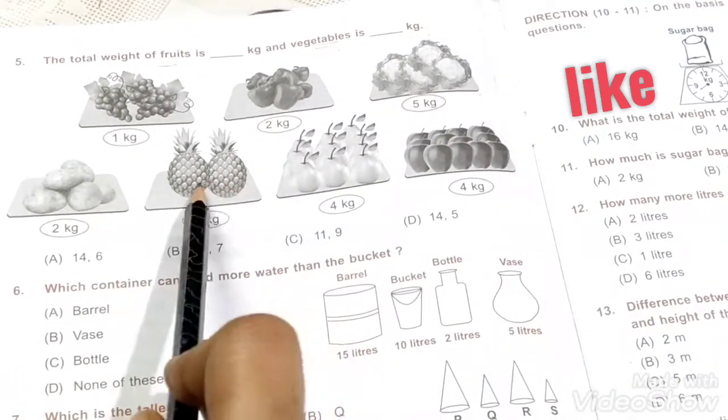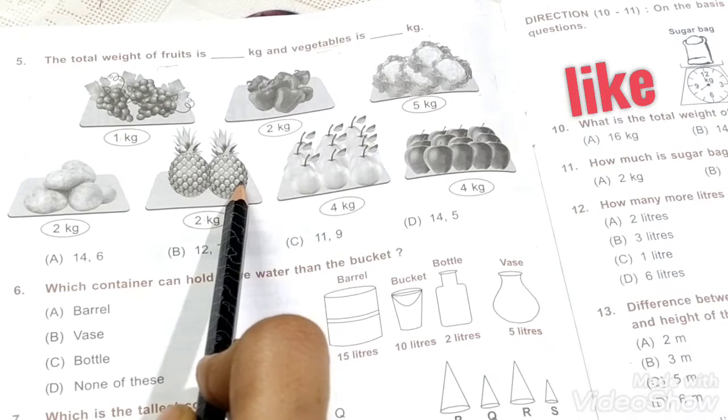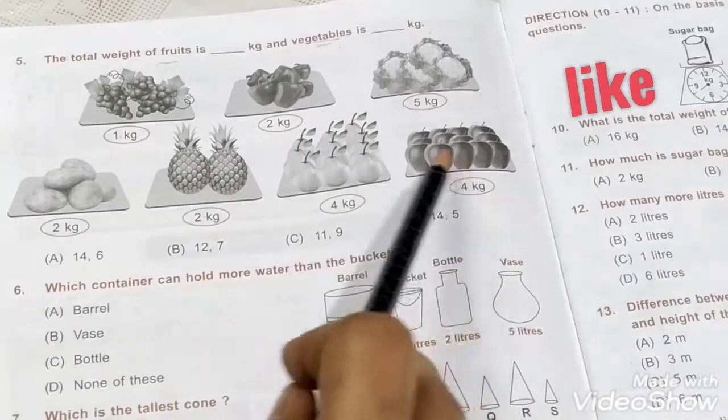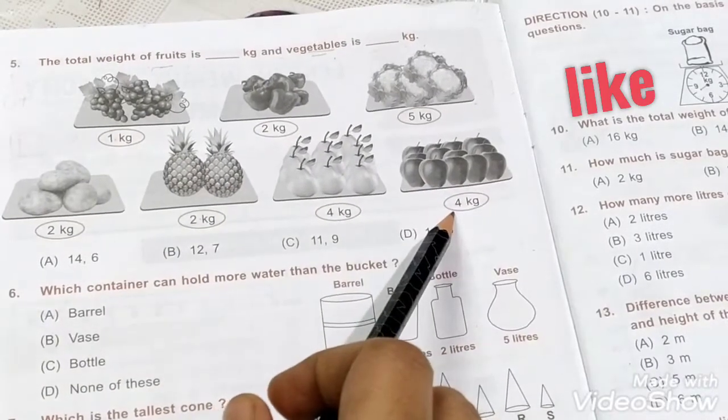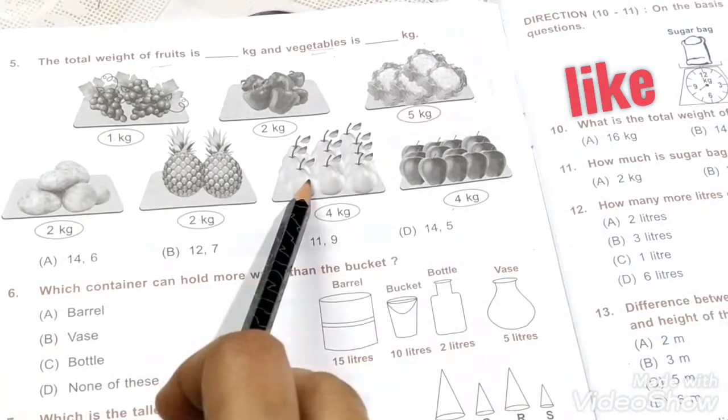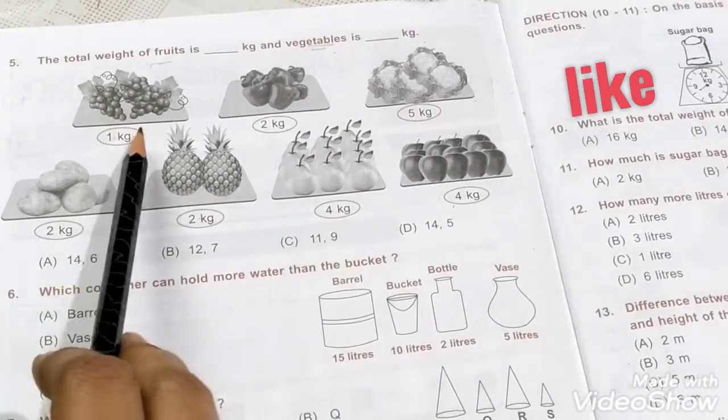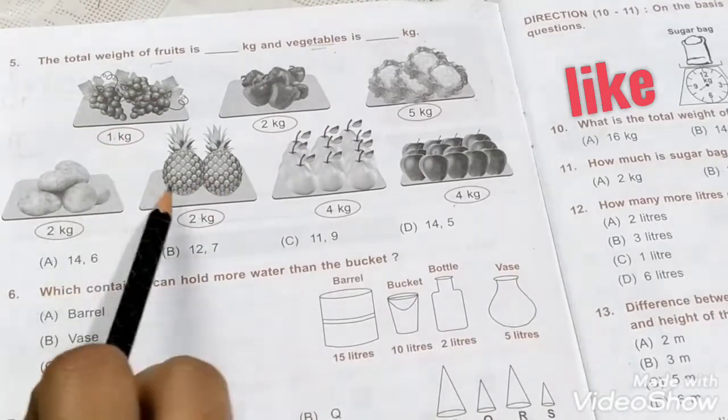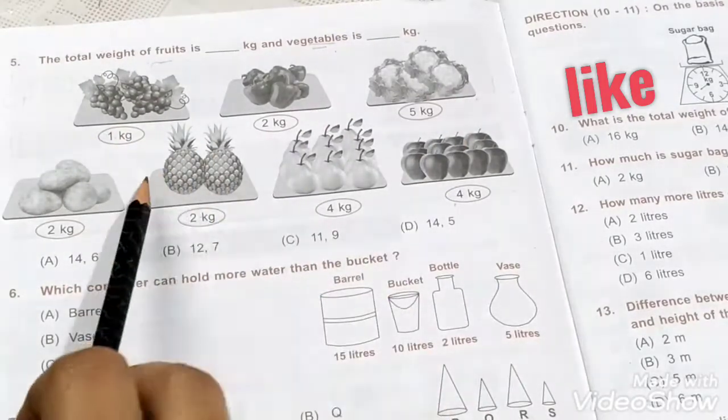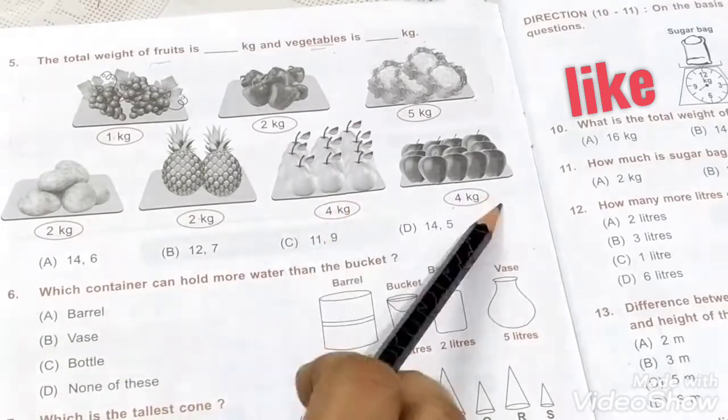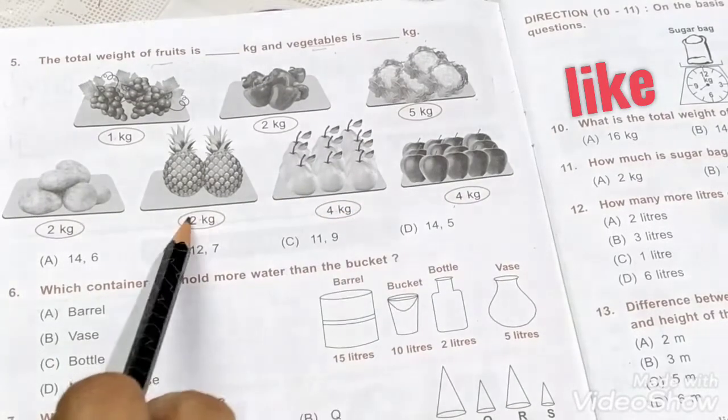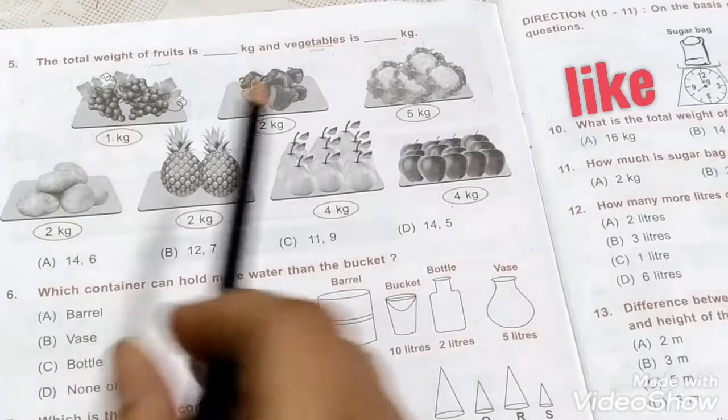Next one, where is the fruit? Two kg of pineapple, four kg of apples. So you have to add. You have to add all fruits. Four plus four is eight, eight plus two is ten, ten plus one is eleven.